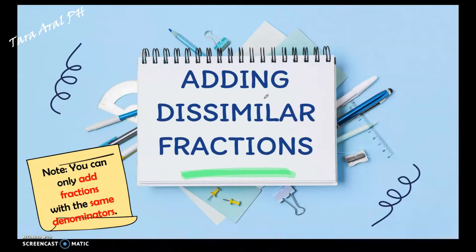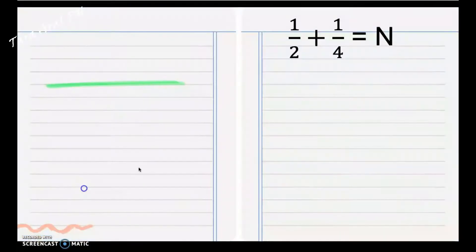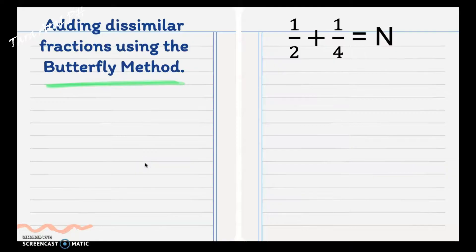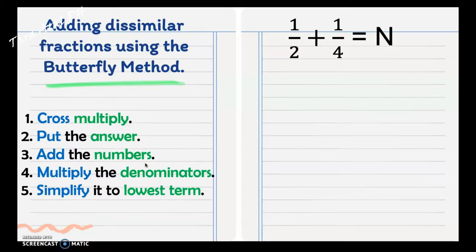Next, adding dissimilar fractions. Dissimilar fractions are fractions where the denominators are different or unlike. Take note that you can only add fractions with the same denominators. Let's add dissimilar fractions using the butterfly method. The butterfly method is an easy way of adding dissimilar fractions.